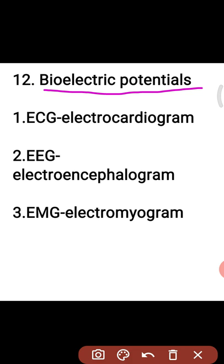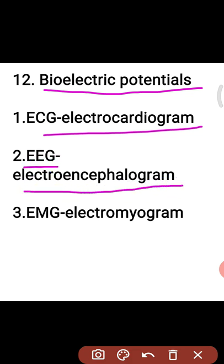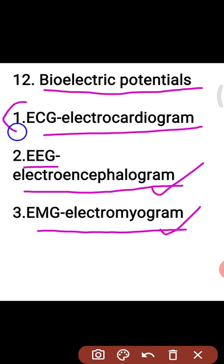These potentials and waveforms are named on an application basis. The first one is the electrocardiogram, suitable for the measurement of heart potentials. The second is the EEG (electroencephalogram), suitable for measurement of human brain potentials. The third is the electromyogram, suitable for measurement of human muscle potentials. These are the basic bioelectric potentials from human physiology.